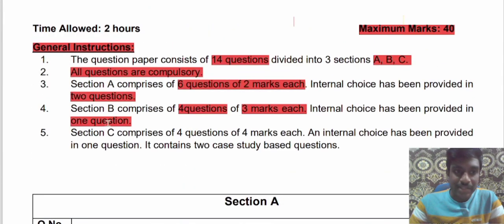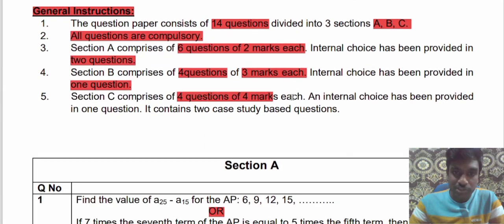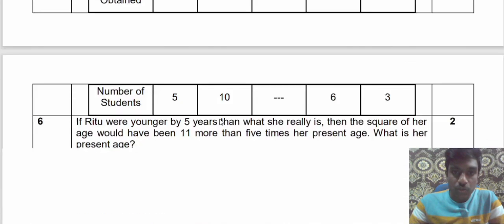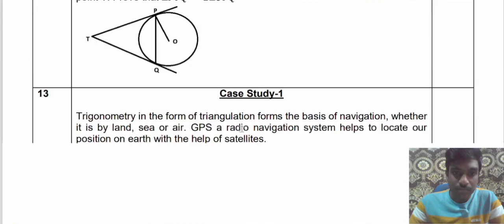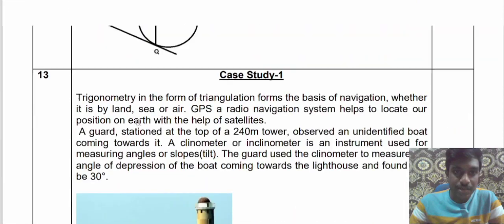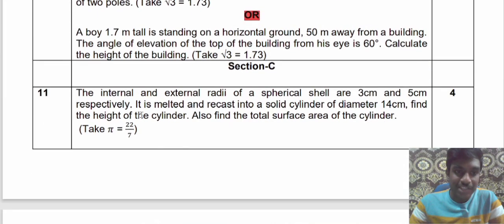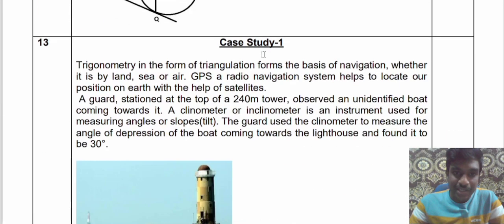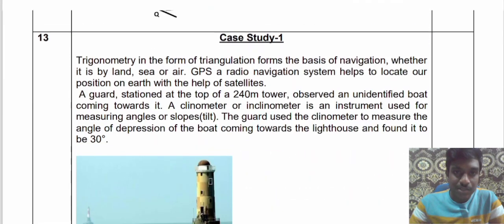In Section C there are 4 questions of 4 marks each and internal choice has been provided in one question. It also contains 2 case study based questions. The questions are numbered 11, 12, 13, and 14. In the 12th question they have given 1 internal choice, and questions 13 and 14 are the 2 case study based questions.